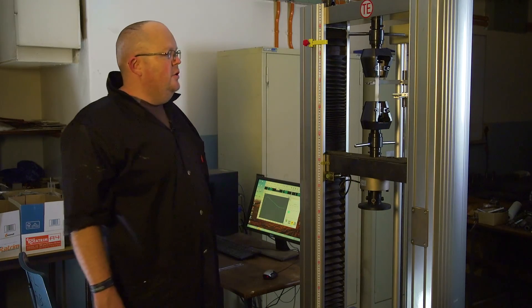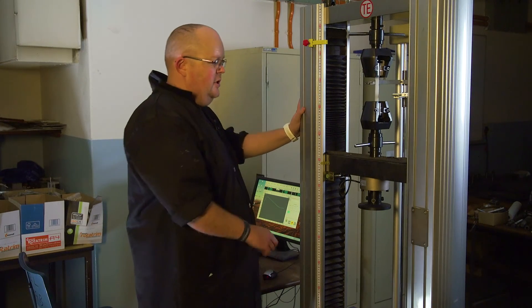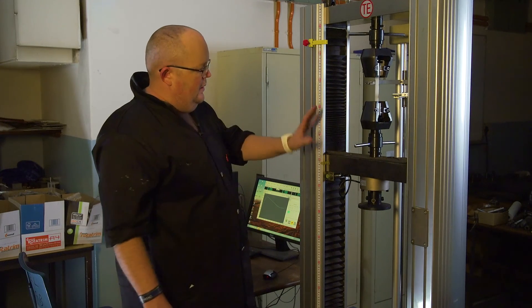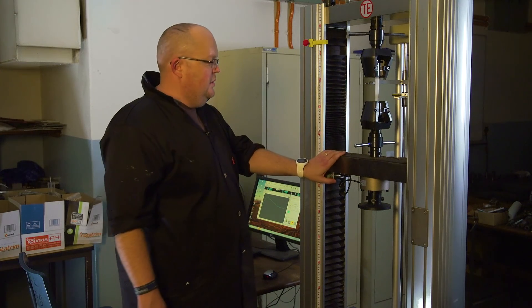This is a TE universal testing machine. We will be using this for our polymer testing, similar to the Shimatsu we showed in the metals video. It has a cross head which can move up and down, so we can do tensile and compression tests on this machine.